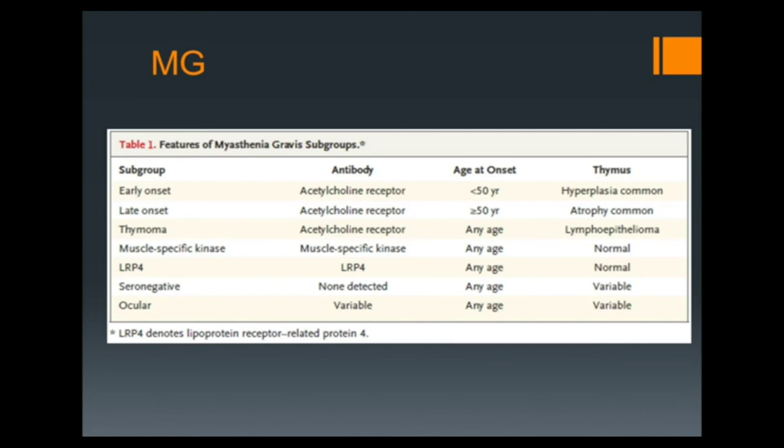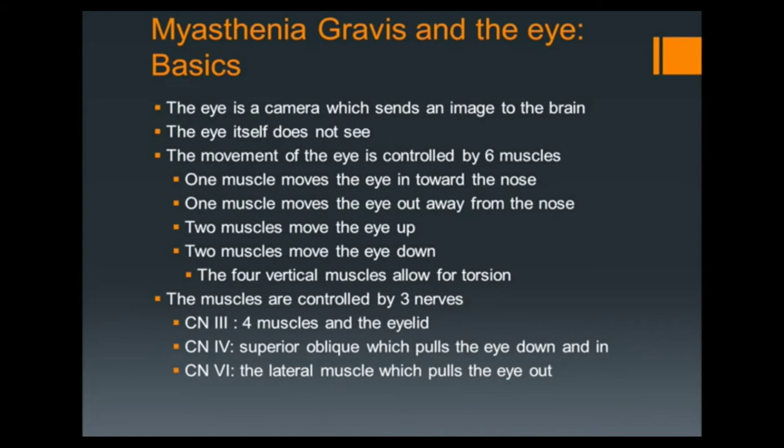Here's how you define it. The early onset group is usually less than 50. The late onset group, usually greater than 50. Patients with thymoma can be any age. Muscle specific kinase, any age. As far as the LRP4, seronegative and ocular — there are some things that we can define by how they start, when they start, and what they do that will help us decide what to do. This is how we define the disease clinically, with age of under 50 and over 50.